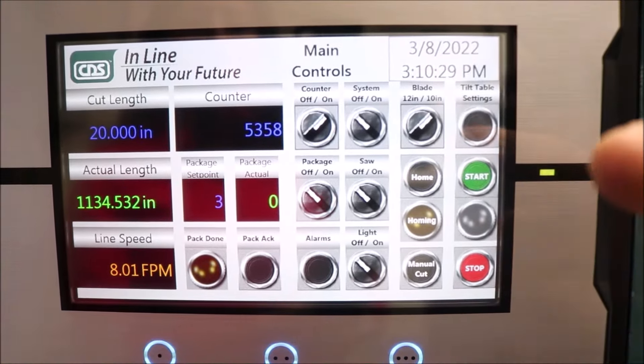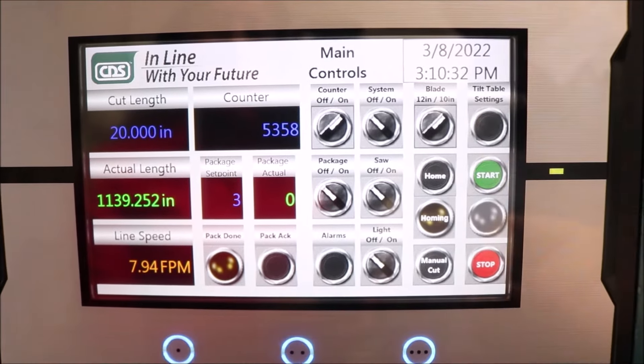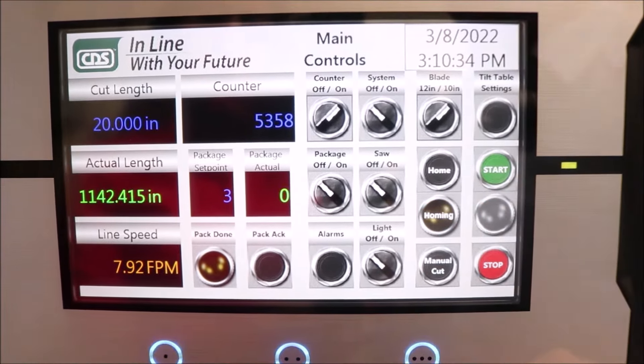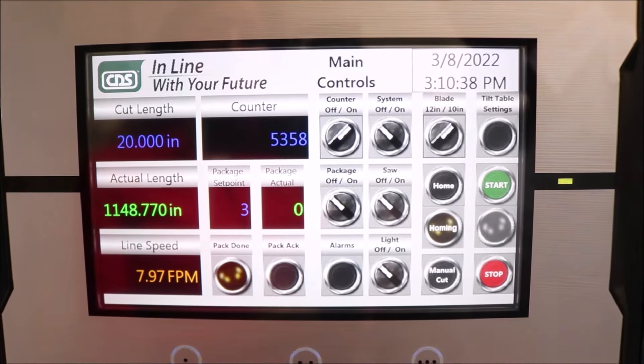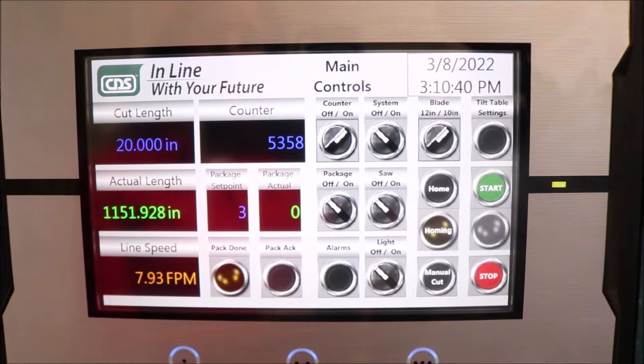Some of the feature buttons that you will have on all of our saws is also the system on, the saw on/off, and the light on/off to have light inside of the saw compartment in an enclosed saw or down cut saw.